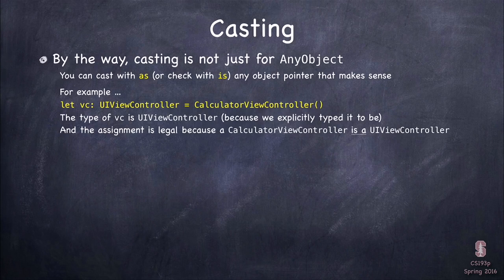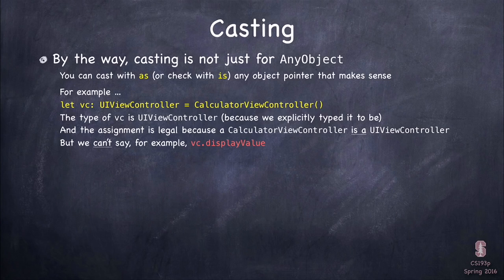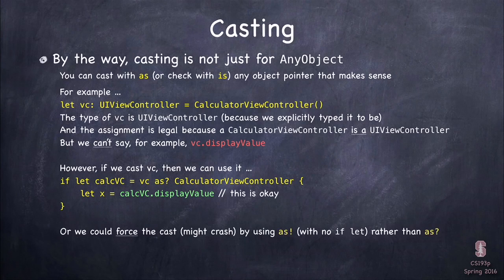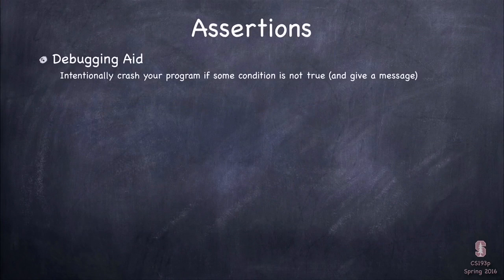One more thing about casting: you can cast things besides AnyObject. For example, if you have a class that's a subclass of another class, you can try to cast using `as` to get the subclass — `as` will tell you whether it is. If I have a `ViewController` base class, I can't say `vc.displayValue` because that's a CalculatorViewController thing. But if I cast `vc as? CalculatorViewController`, now I could use `displayValue`. So `as` is for more than just AnyObject. You can also force-cast with `as!` — it'll crash if it can't do it.